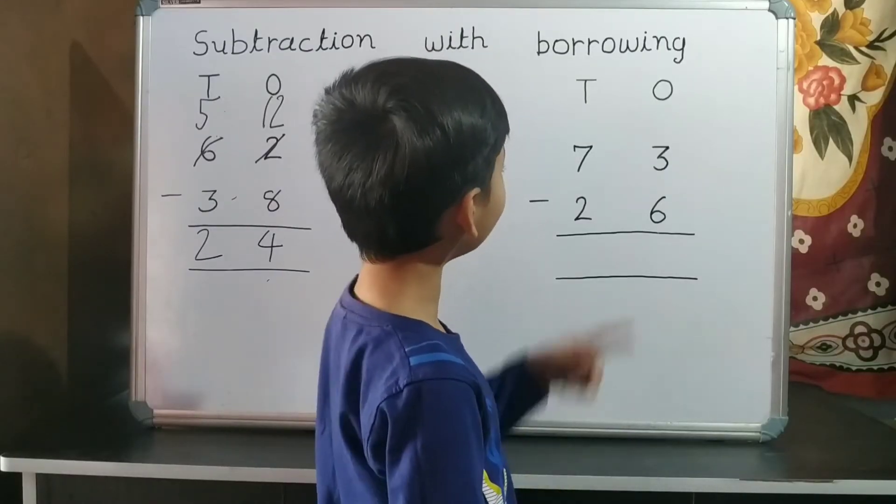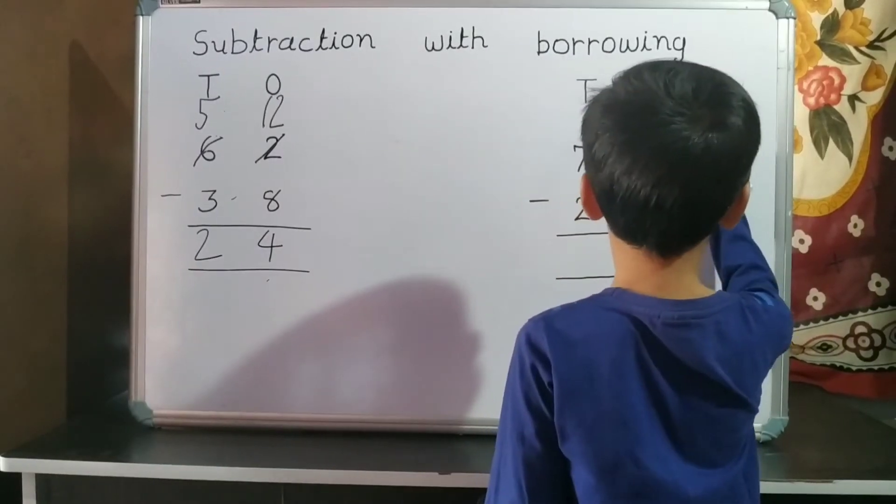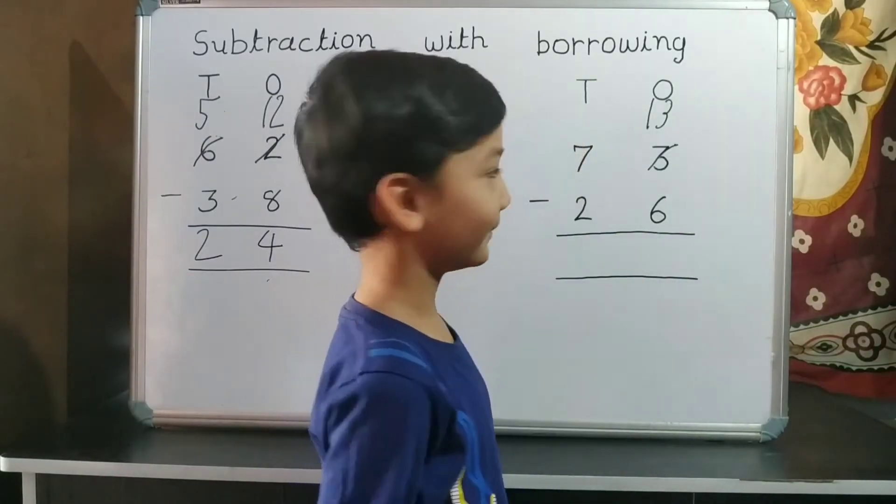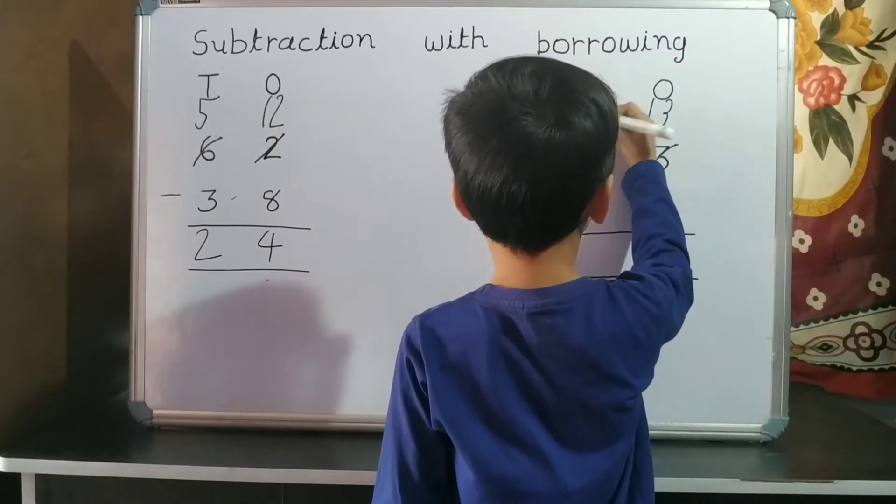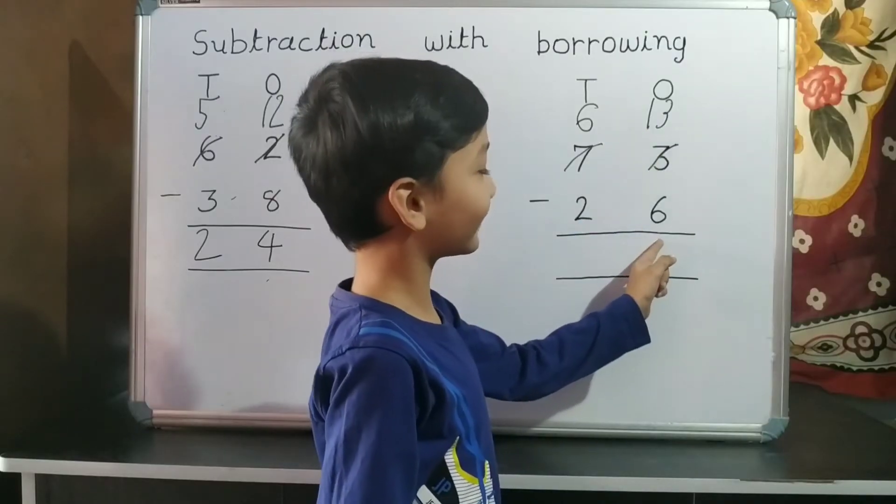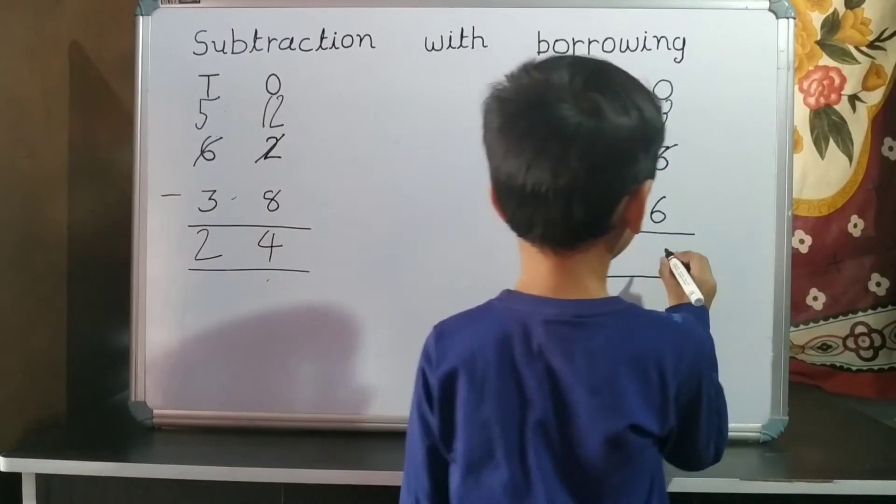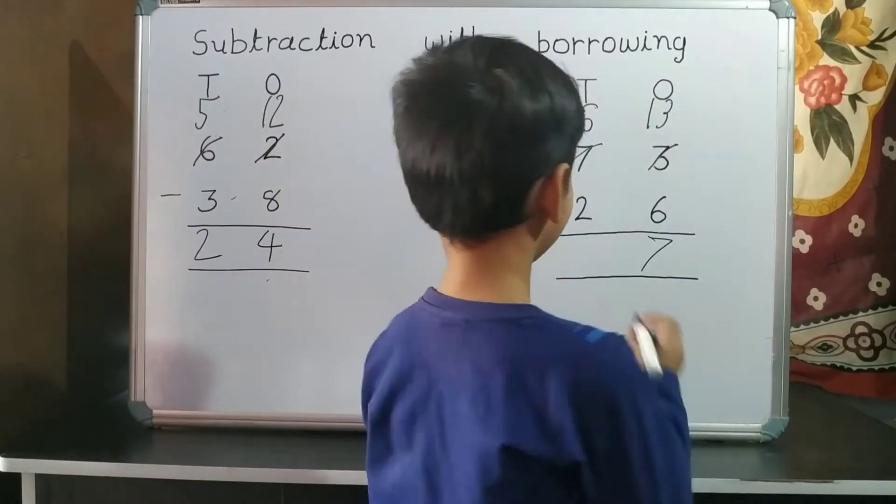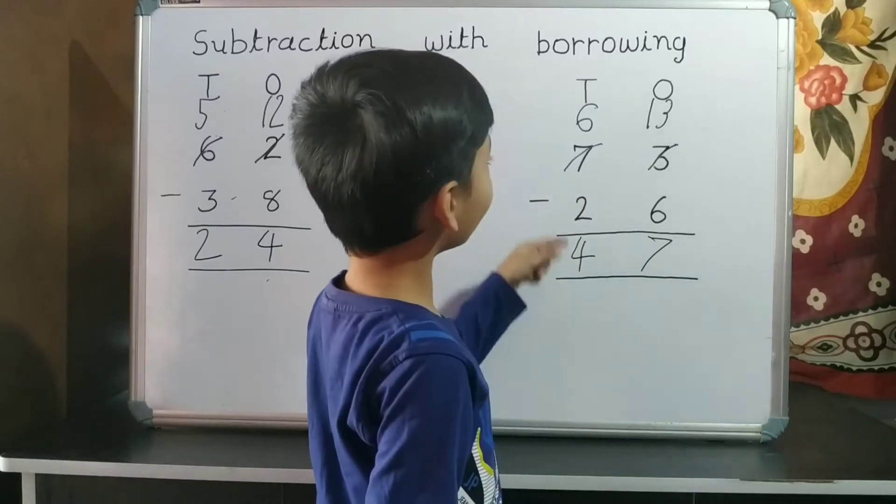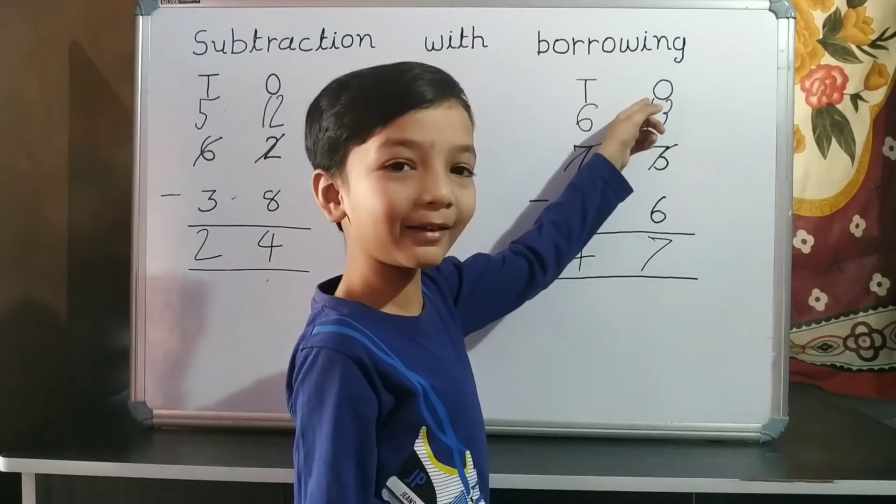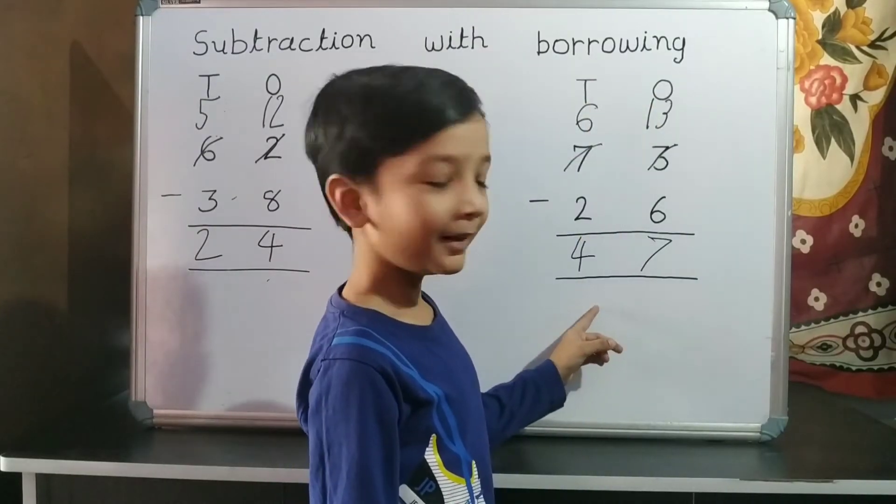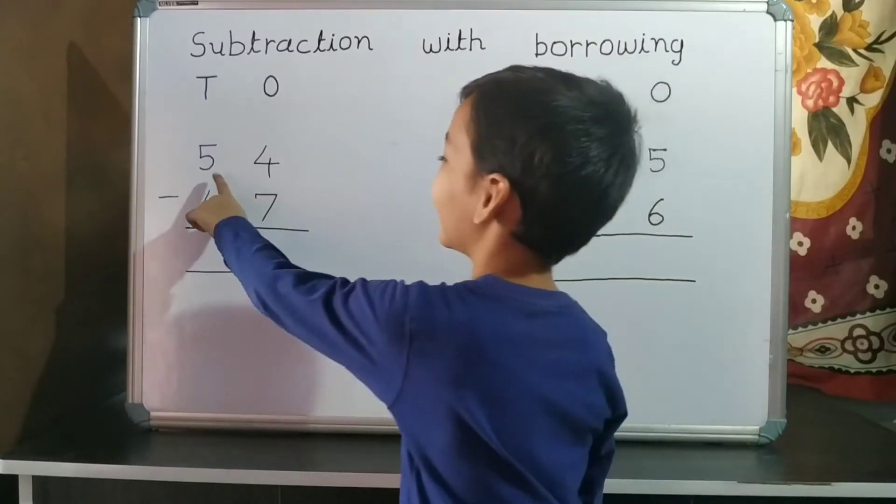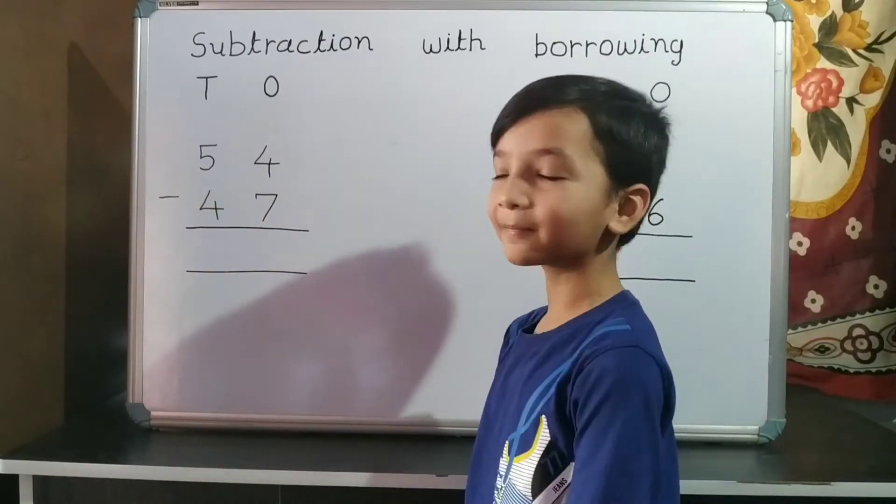So we borrow 10 from 10's place. Now 7 becomes 6. 13 minus 6 equals 7. 6 minus 2 equals 4. So our answer is 47.